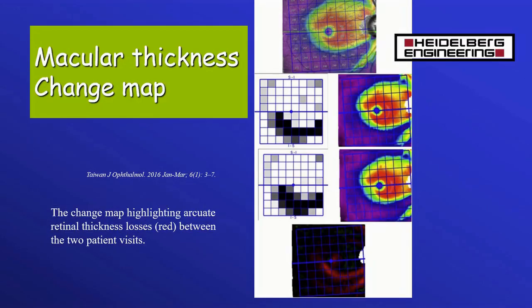In the Heidelberg, comparison of thickness between one visit and the next can be done by the machine and the difference can be plotted out. This can be done for the whole thickness of the layers of the retina or for specific individual layers. The change map shows changes between two tests.